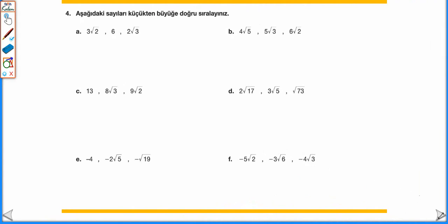Aşağıdaki sayıları küçükten büyüğe doğru sıralayınız. Kare köklü ifadelerde sıralama yapmak için, verilen sayıların hepsini kökün içinde yazarız. 3√2, 6 ve 2√3'ü sıralamak için: 3 → √18; 6 → √36; 2 → √12. Kökün içindeki sayılara bakıldığında en küçük 12, sonra 18, sonra 36 olduğu için: 2√3 < 3√2 < 6 olarak sıralanmış olur.